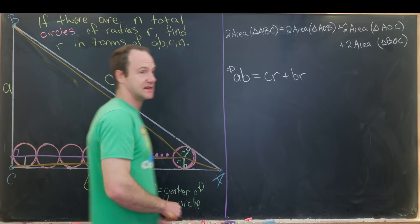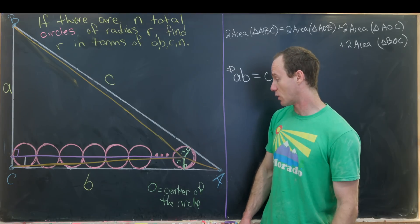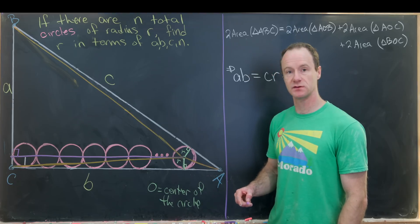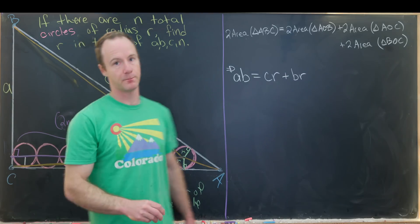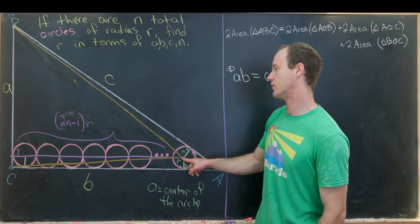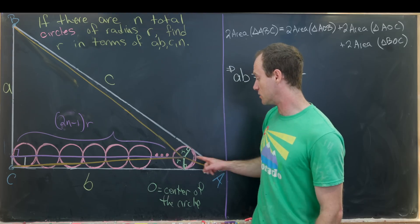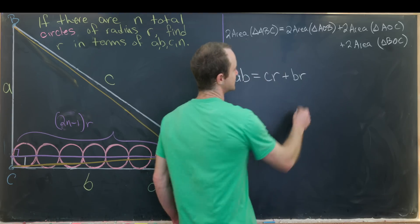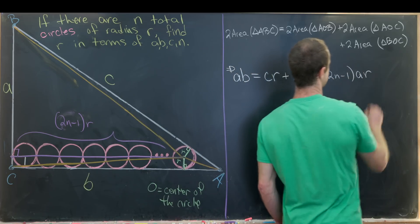It's pretty easy to calculate the length of this purple line because it goes through n minus one total circles and then one half circle. So it takes the diameter of n minus one circles plus the radius of one circle. In the end this has length 2n minus one times R. Now triangle BOC will have a height of 2n minus one times R and a base of A. So twice the area is equal to 2n minus one times A times R.